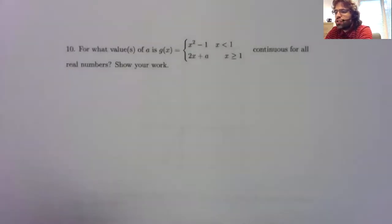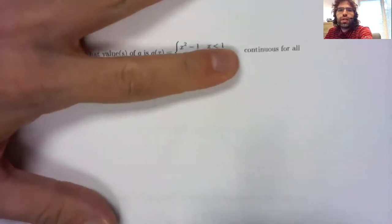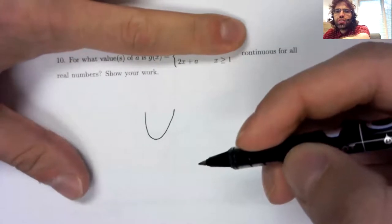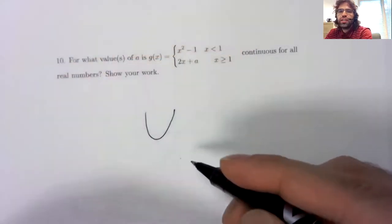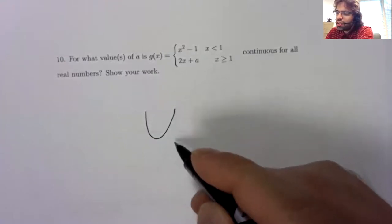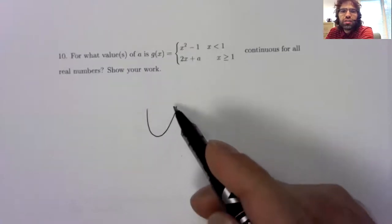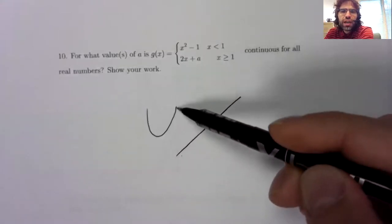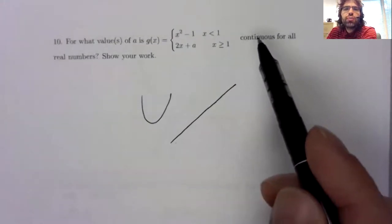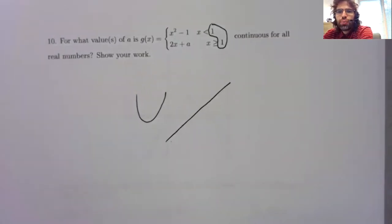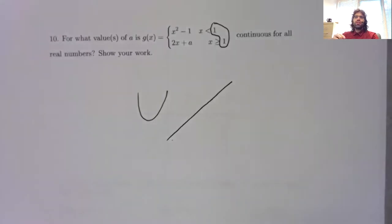So first observation, x squared minus one is continuous. It's a quadratic. 2x plus a is continuous. It's linear. So the only way we can not be continuous is if when we're moving from this continuous function to the second continuous function, we have a jump. So even though I phrase this in terms of being continuous for all real numbers, the only real number we're really concerned about is one. This is definitely continuous everywhere else.